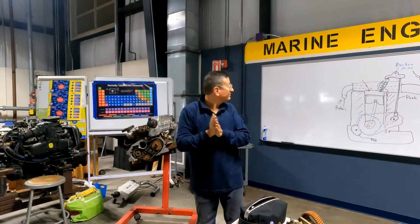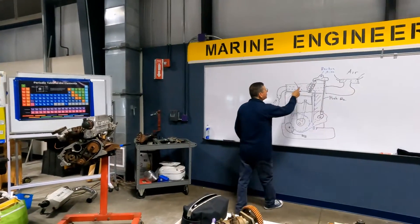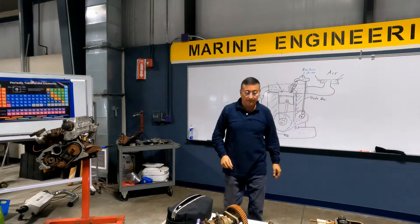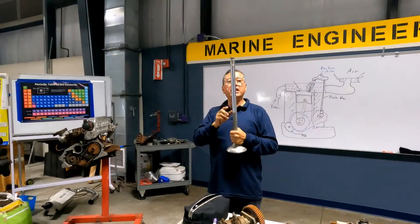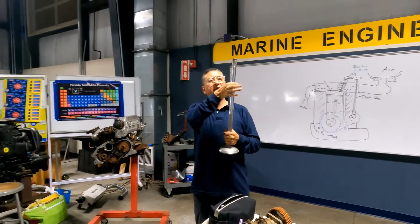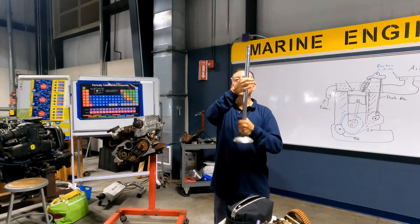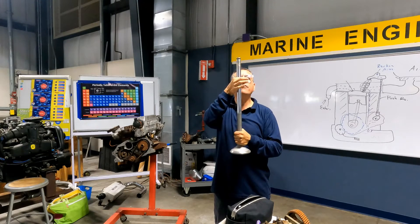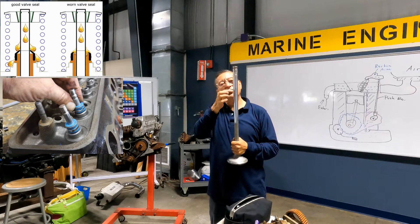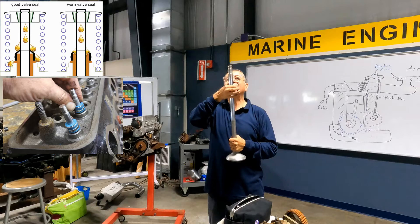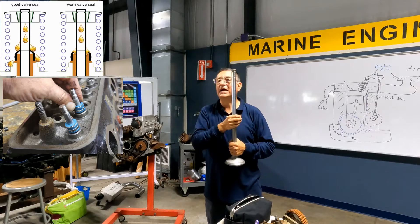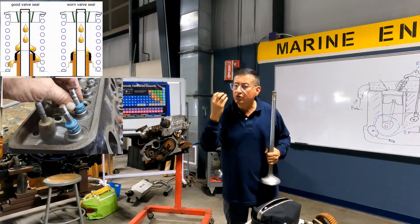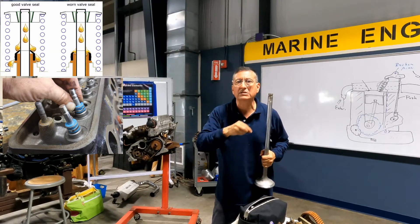Pay attention. When the oil reaches that point, if the valve and the spring is here, and here we have a pipe — the guide where the valve is moving — and around this guide we have a seal, a special seal. Now we are going to disassemble the head; we are going to see the seals, we are going to analyze the seals.